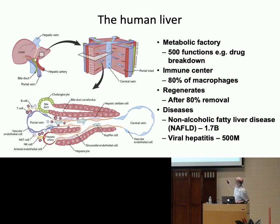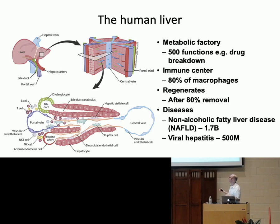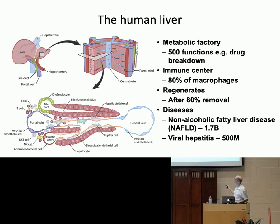The liver is a metabolic and immune center of the body with over 500 cataloged functions. Drug breakdown — any kind of chemical from outside your body — the liver's job is to break that down and reduce the toxic chemicals. It's responsible for a lot of the metabolism that keeps our energy going. It's a big immune center; most of the macrophage cells in the body are in the liver. Interestingly, it's one of the most regenerative organs — you can take 80% of the liver away and it will grow back. In terms of diseases, viral hepatitis and non-alcoholic fatty liver disease are affecting almost 2 billion people worldwide.